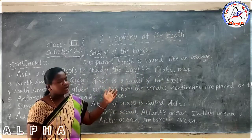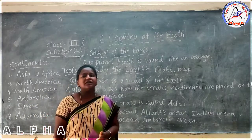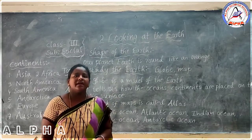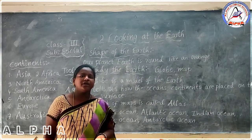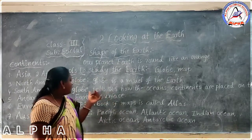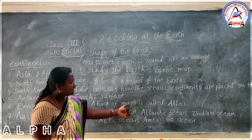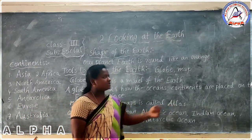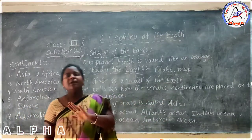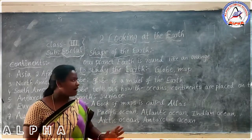The next tool is the map. By using a map, we can identify any place, any country, any ocean, and any continent. A book of maps is called an atlas. In one book there are so many maps — that book is called an atlas.